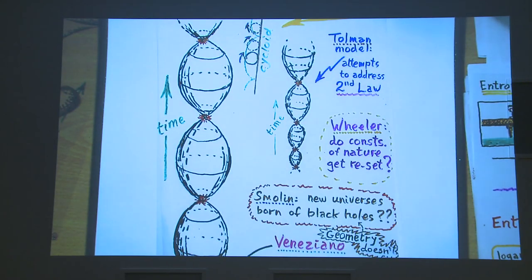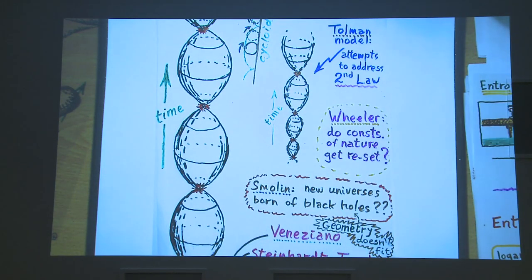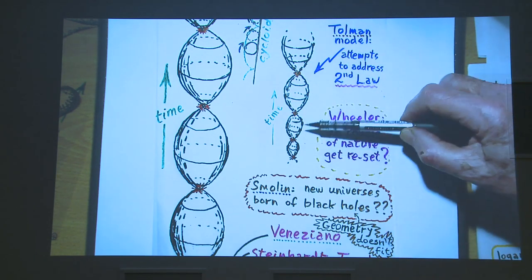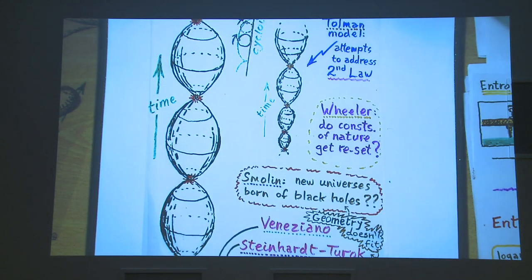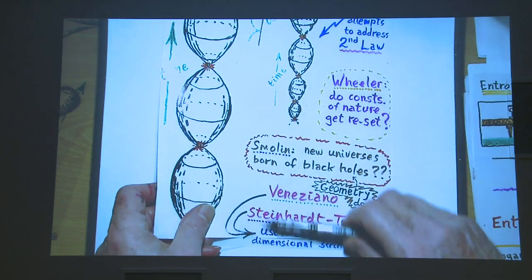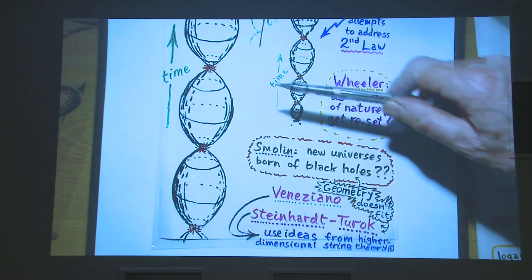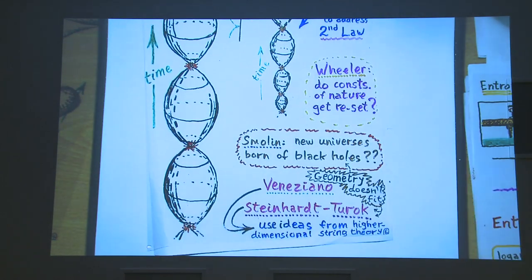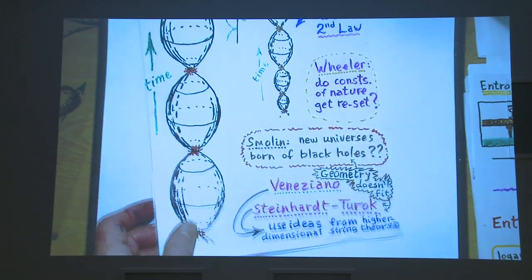Tolman made a slightly more sophisticated model in which there was a version of the second law, and he found these phases would get bigger and bigger. That's actually a very primitive attempt at addressing the real problem, which is much more serious. Others have models too—Smolin has one where new universes come out of black holes. Veneziano is probably the closest to what I want to say.